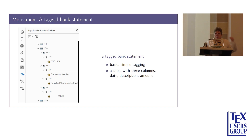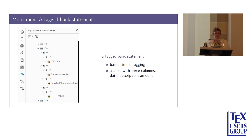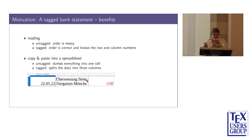You can also ask which header a column has, so that you really know what the data is. And if you copy and paste into a spreadsheet, with an untagged PDF you simply get everything in one column in a messy order. With a tagged PDF, the data is correctly split over three columns — the date, description, and amount are correctly placed. That means the data is reusable; scripts can use it.